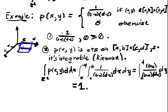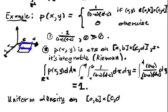This is also called the uniform distribution, or the uniform density, on [A,B] × [C,D]. It's uniform because the probability of any event is uniform throughout the area.